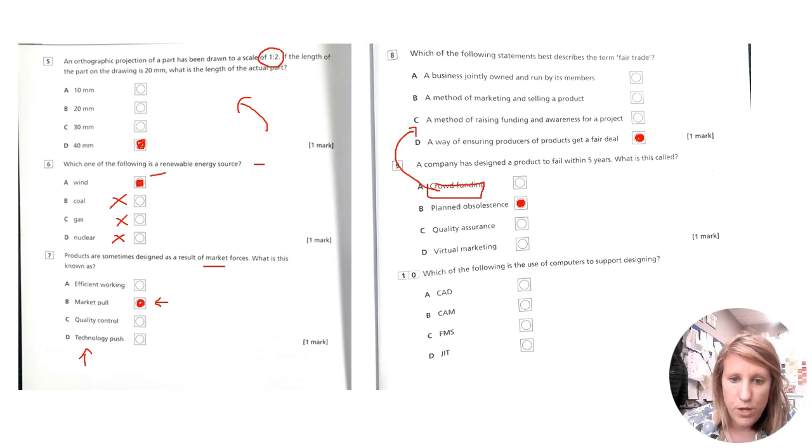Which of the following is the use of computers to support designing? Well, there's only one D there. It's CAD, isn't it? Computer-aided design. The other ones, just so you're aware, computer-aided manufacturing, flexible manufacturing systems, and just-in-time manufacturing. Now, flexible manufacturing systems are pieces of machinery that you can use to make lots of different types of products. So everything that we have in the workshop or in school is flexible because the laser cutter, for example, is not designed like an injection molding machine to just make one product. You can upload another CAD file and very easily make lots of different things. If something, a flexible manufacturing system, it means you can change what you're doing quite easily.